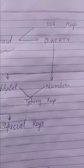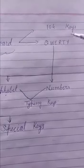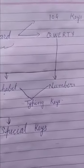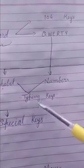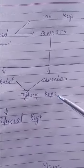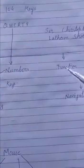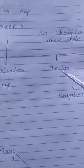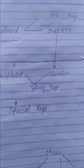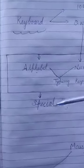Now, the keys, that 104 keys, we can divide them in 4 main parts. The first part is typing keys. Then second one is function keys. Third one, navigation keys. And the fourth one are special keys.